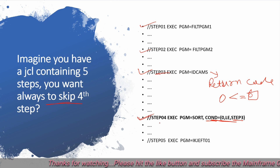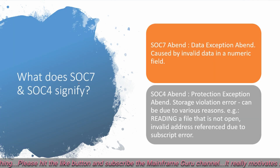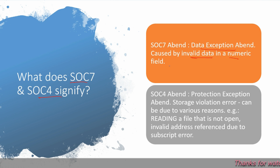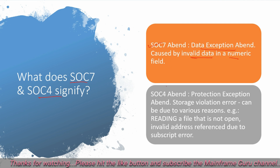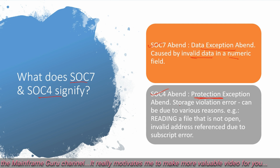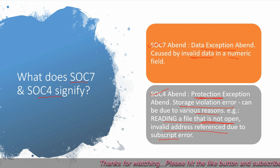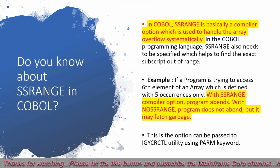Next question: what do SOC7 and SOC4 signify? SOC7 is a data exception event caused by invalid data in a numeric field — when you perform an operation on a numeric field containing garbage data, the SOC7 event arises. SOC4 is a protection exception event — a storage violation — which can occur due to reading a file that is not open, an invalid address reference due to a subscript error.